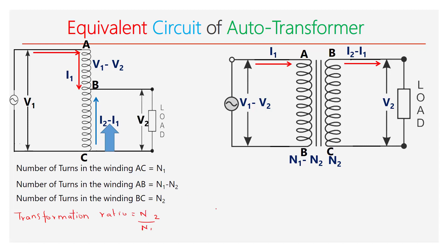The transformation ratio of a conventional transformer is given by N2 by N1. For an autotransformer, the transformation ratio K_AT is equal to the number of turns on the secondary side N2 divided by the number of turns on the primary side N1 minus N2. Dividing the numerator and denominator by N1, and since N2 by N1 equals K, we get K_AT equals K divided by 1 minus K.